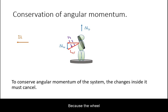Because the wheel is connected to the person while isolated from everything else, the change of angular momentum of the person must compensate for the change of angular momentum of the wheel.